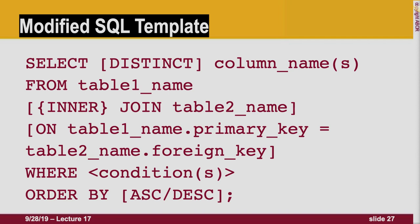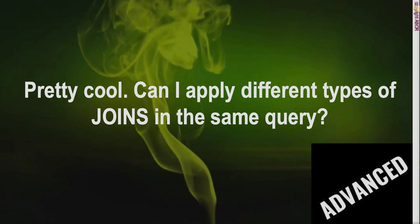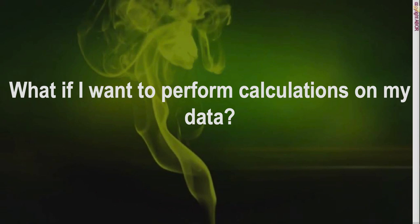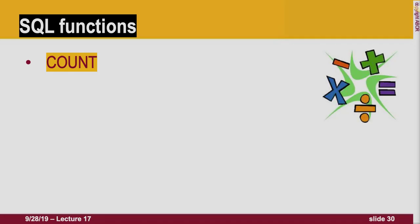You can apply different types of joins in the same query, but you don't have to worry about that. Next: what if you want to perform calculations on your data? SQL comes with a bunch of aggregate functions that can summarize data. You can use COUNT to count records meeting a condition, SUM to total numeric values, MAX for the maximum value, MIN for the minimum, and AVG for the average. You can also concatenate — combine — records, like putting first name and last name together.